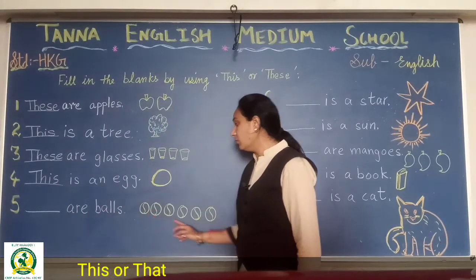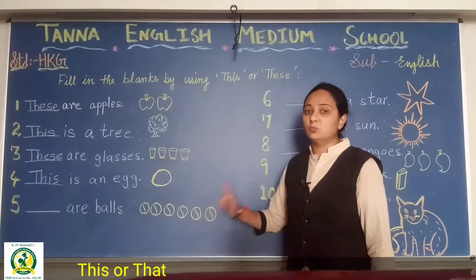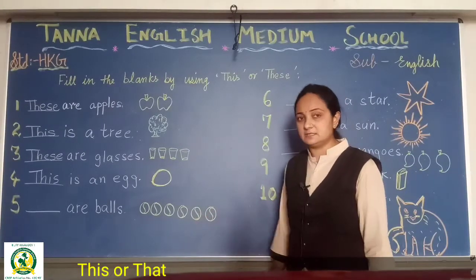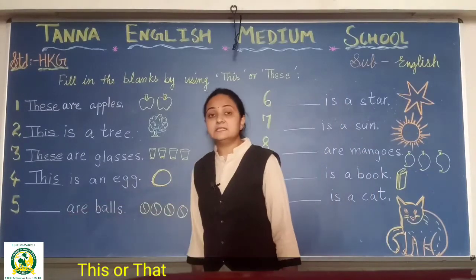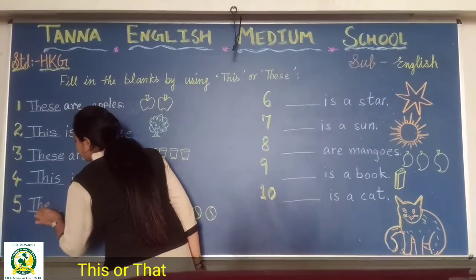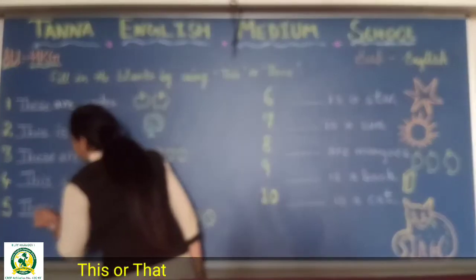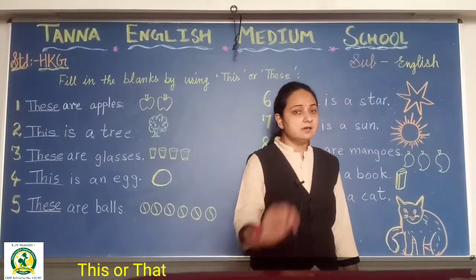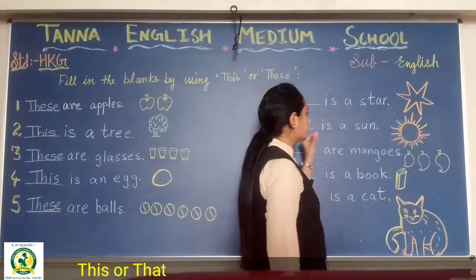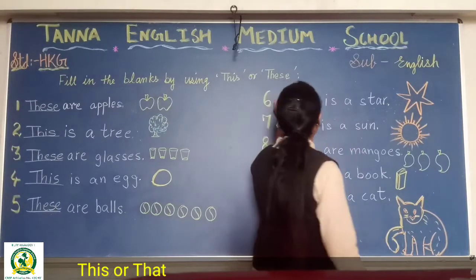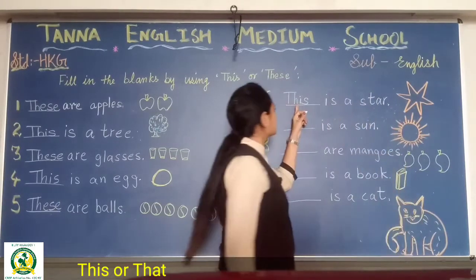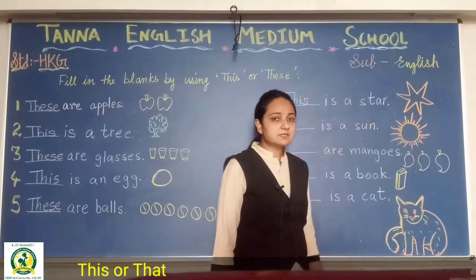Now bowls — how many bowls? More than one, many bowls are here. So what will you write here? 'These.' T-H-E-S-E. And then — only one star. So what will you write? 'This.' T-H-I-S. This is a star.